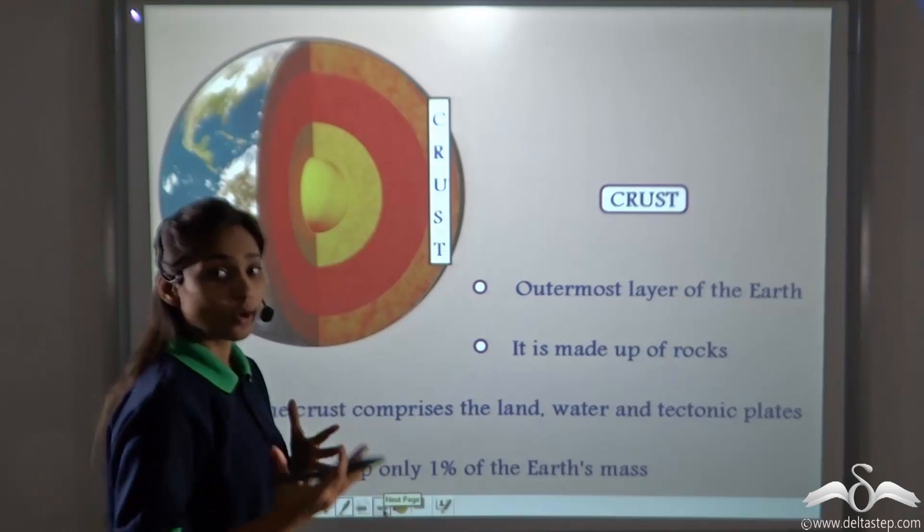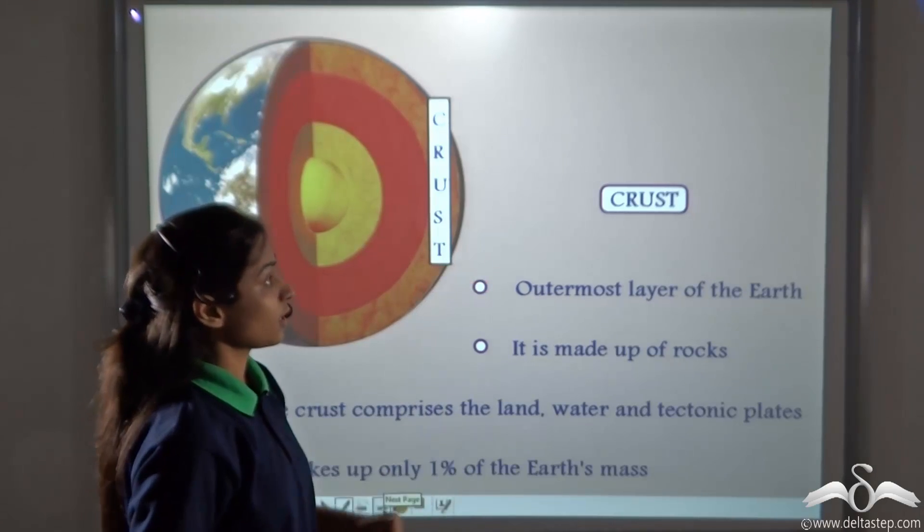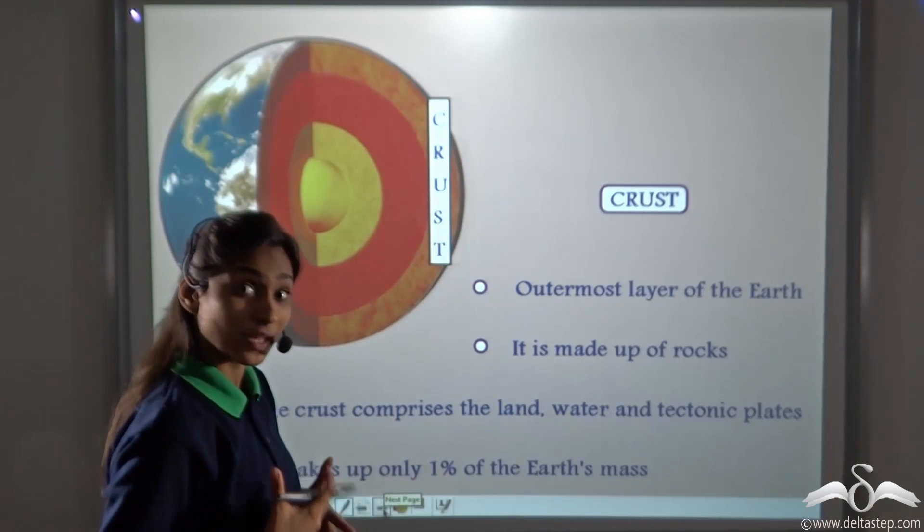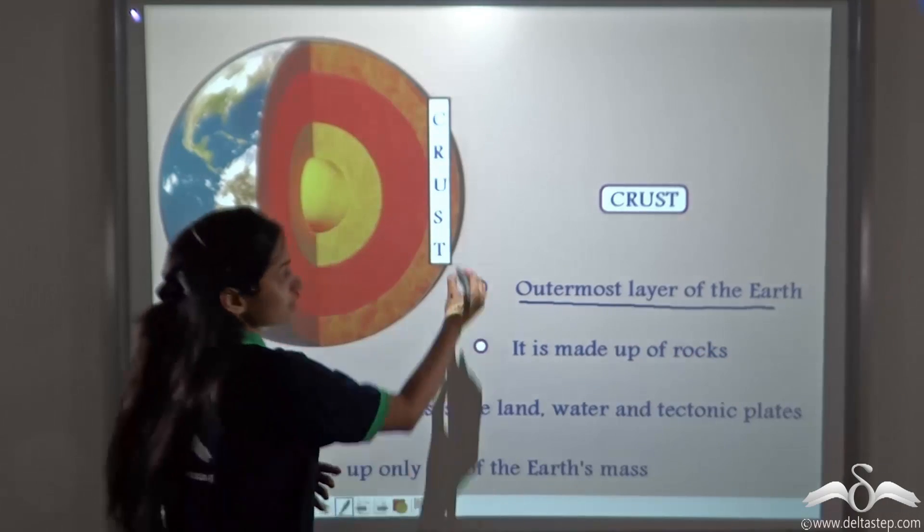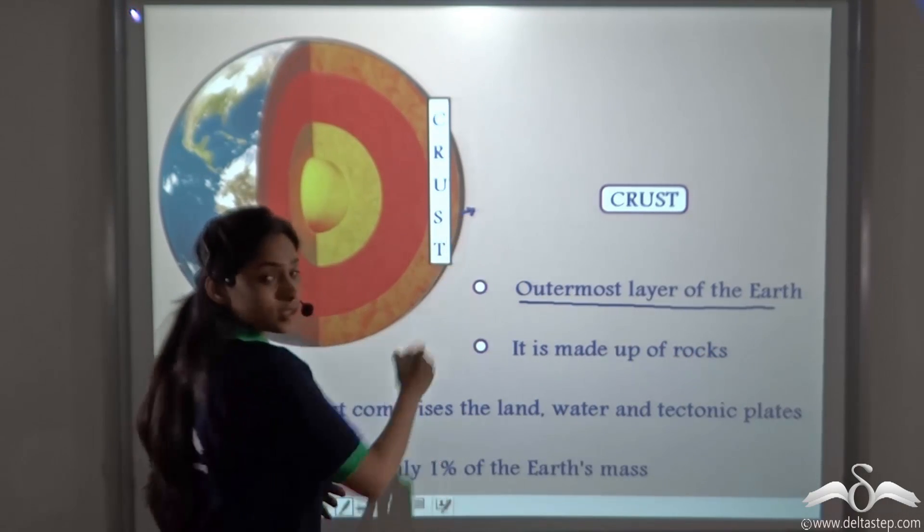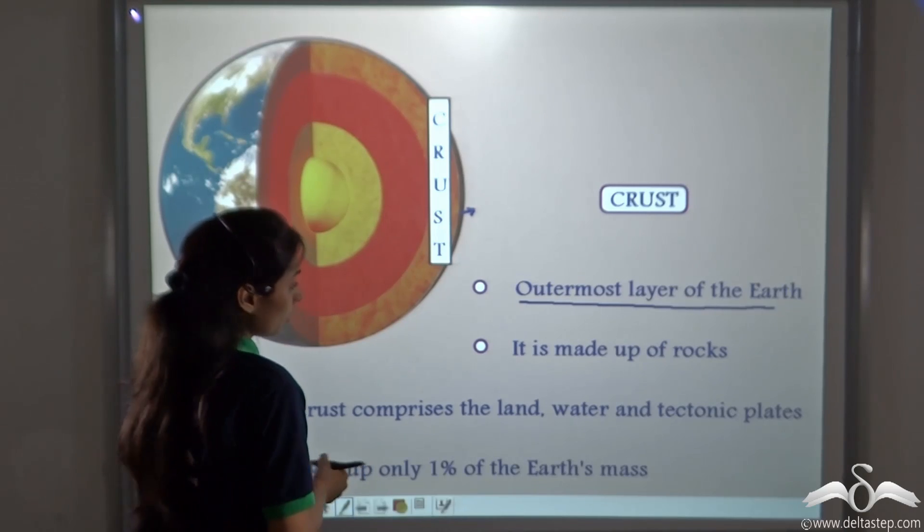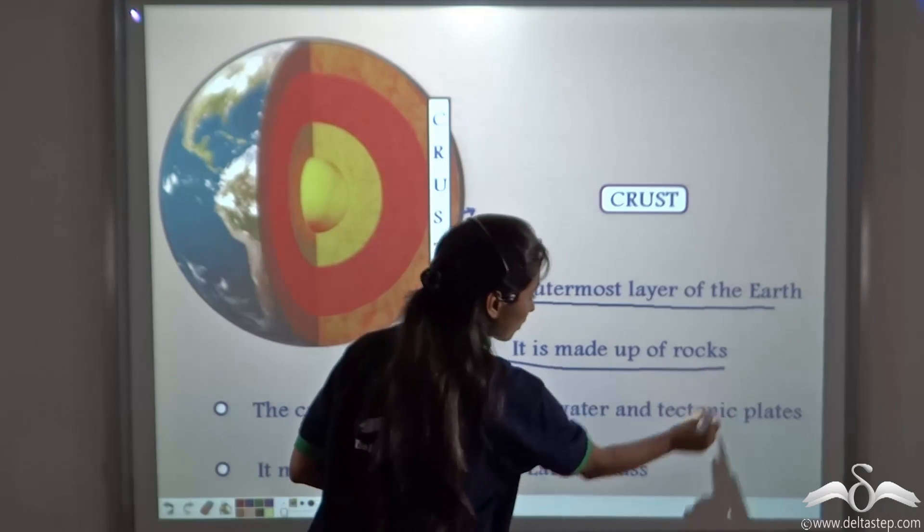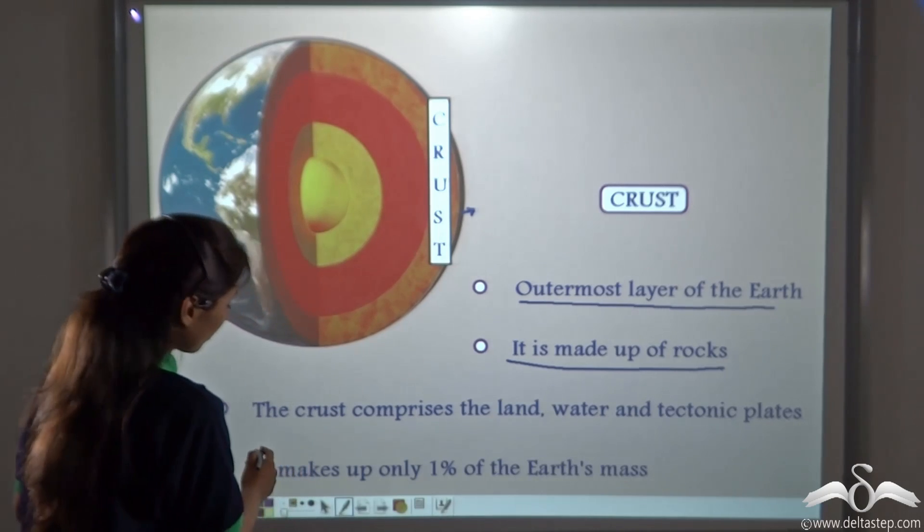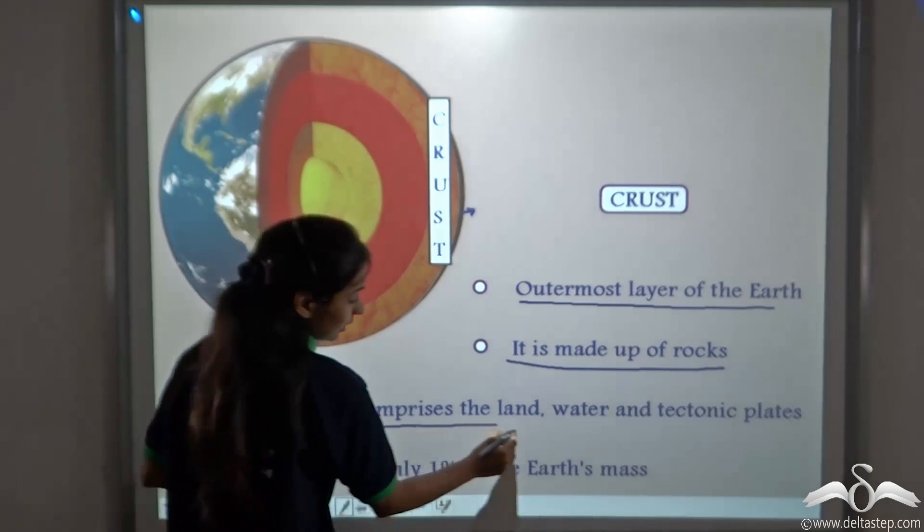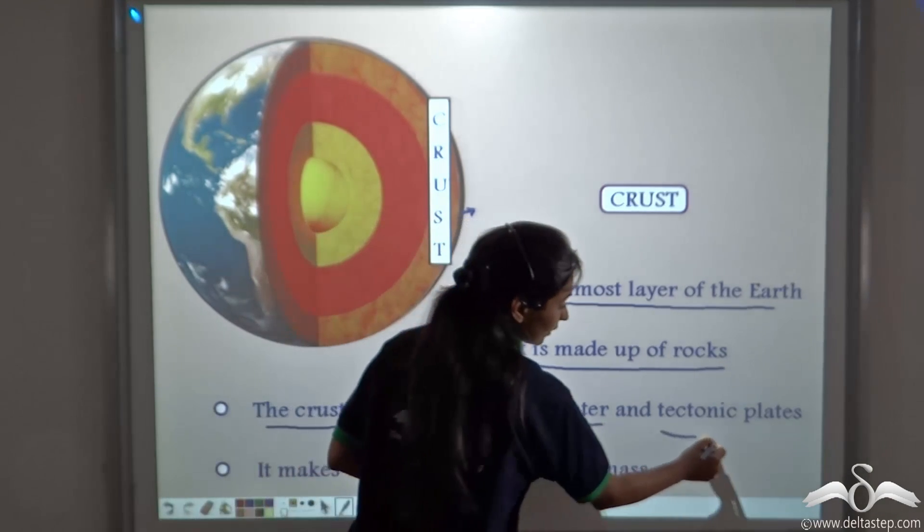Now let us know about some properties of the crust. Now this is the crust on which we live. The crust is the outermost layer of the earth. It is made up of rocks. Now the crust comprises the land, water and tectonic plates.